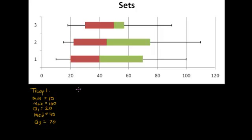Let's look at troop two. The minimum number of boxes of cookies sold for troop two, that's a little harder to pull off of this graph, but let's say that's about 15. And the maximum for troop two, all the way up there at probably about 110.